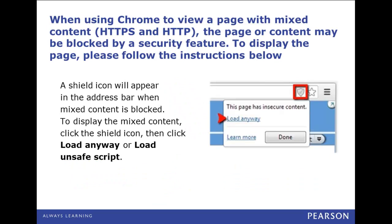Sometimes when using Chrome to view a page with mixed content, the page or content may be blocked by a security feature. To display the page, follow the instructions below. A shield icon will appear on the address bar when the mixed content is blocked. To display the mixed content, click the shield icon, then click Load Anyway or Load Unsafe Script.